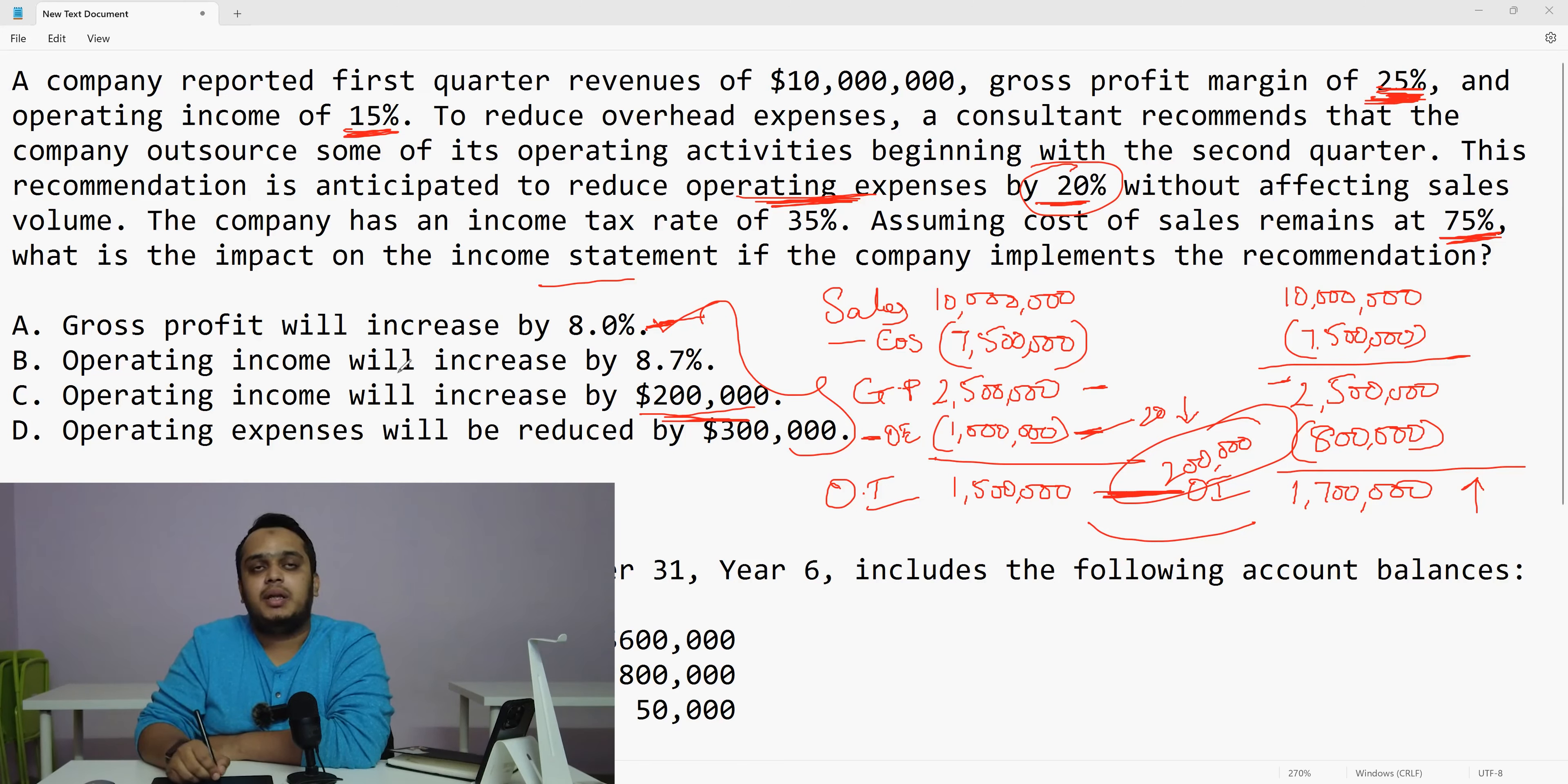Then operating income will increase by 8.7%. So is it 8.7%? Let me just take how much is my operating income which is increasing? 200,000 is my operating income which is increasing. Divide that by 1.5 million. That is 13.33% increase. So 13.33% it is not. He's saying 8.7%. So this option goes also down. Then he says my operating expenses will be reduced by 300,000. Not at all. I don't think so. What happened here? 200,000 it went down. 20% is 200,000. So 200,000 went down, not 300,000. So the answer is option C.